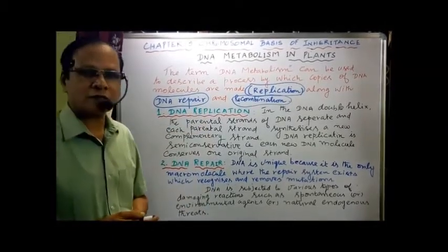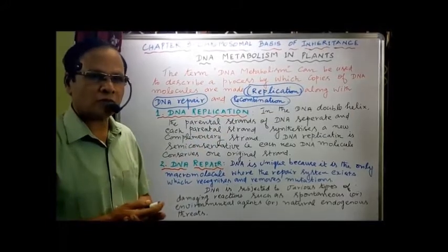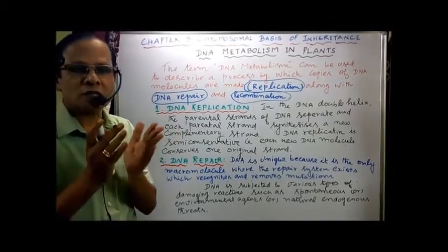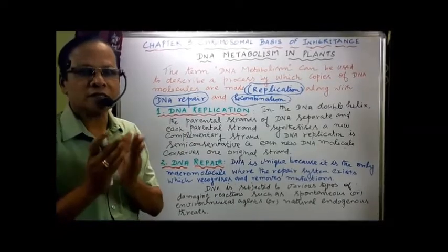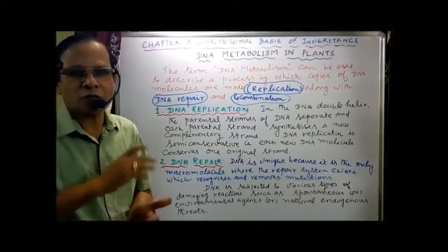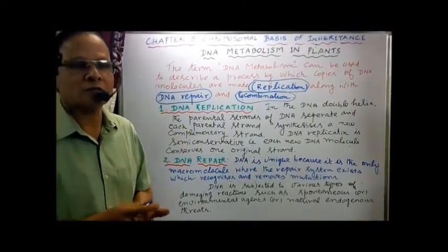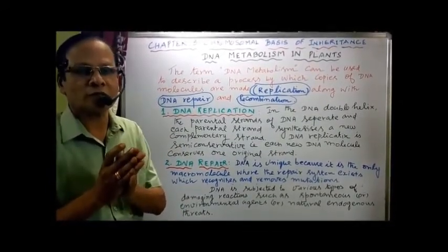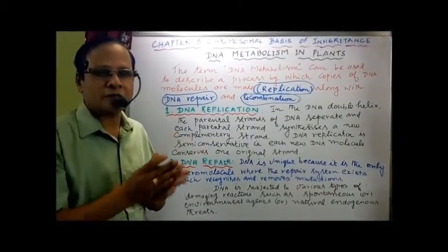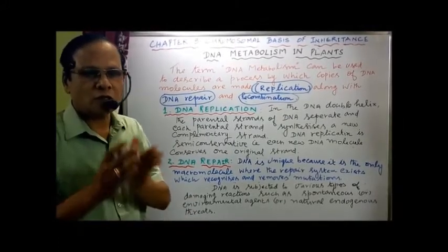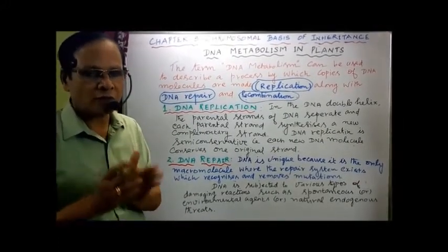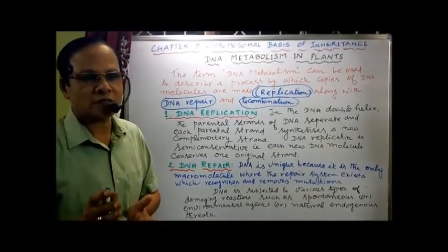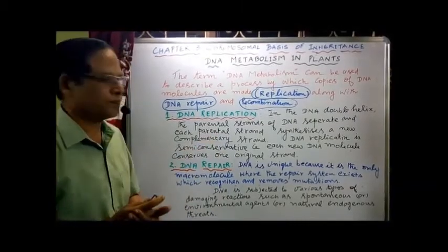What is DNA replication? You have already studied in Zoology, so I want to go through quickly. In the DNA double helix, we have two strands of DNA. The two strands get separated, and each strand can synthesize its own complementary strand. DNA replication is a semi-conservative method or process, in which the newly formed DNA molecules have one strand conserved - the parental strand - and another newly synthesized strand. This is called DNA replication.